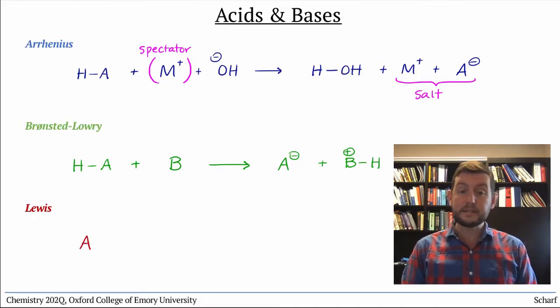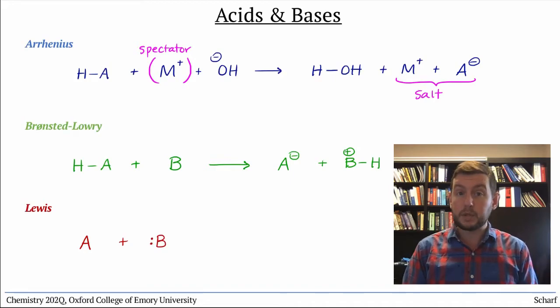The base, by definition, must have a pair of electrons, a lone pair, so we'll abbreviate it B with a lone pair.